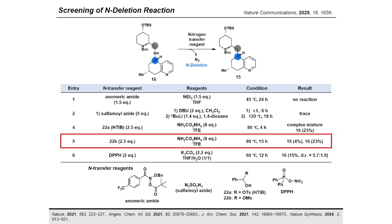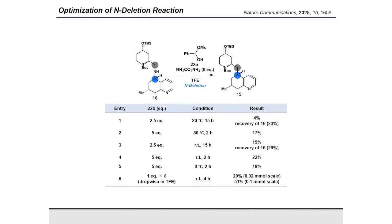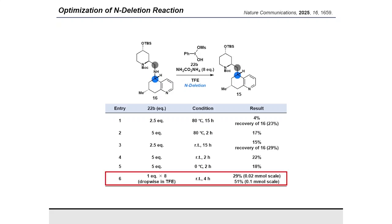While the use of DPPH also proceeded with the reaction, the product was obtained as a mixture of diastereomers. Further optimization of reaction parameters was performed, including the equivalents of the hypervalent iodine reagent, temperature, and reaction time. Finally, we identified that lowering the reaction temperature and adding the iodine reagent dropwise in solvent provided the product in 29%.